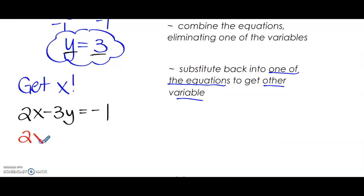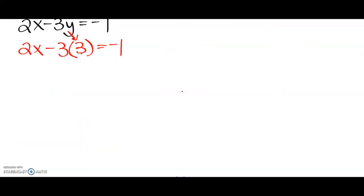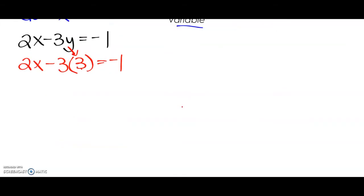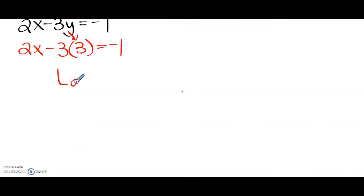In the place of Y, I'm going to substitute the number 3. So 2X minus 3 — we're subbing in Y equals 3. That has nothing to do with the coefficient; that's our value for Y. The equation equals negative 1. We have to multiply the negative 3 and the 3, which is going to give us negative 9.